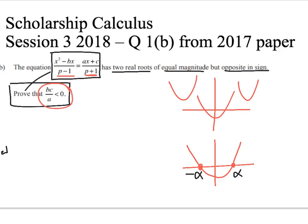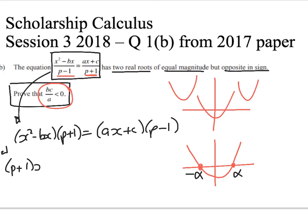The first step is to rearrange my quadratic as follows. We're going to get x squared minus bx times p plus 1 equals ax plus c times p minus 1. I'm going to partially expand this. I'm not going to do every single term because my goal is to collect up the x squared coefficient, the x coefficient, and the constant term. So I'm not going to split up the p plus 1 x squared, I'll just leave it like that.